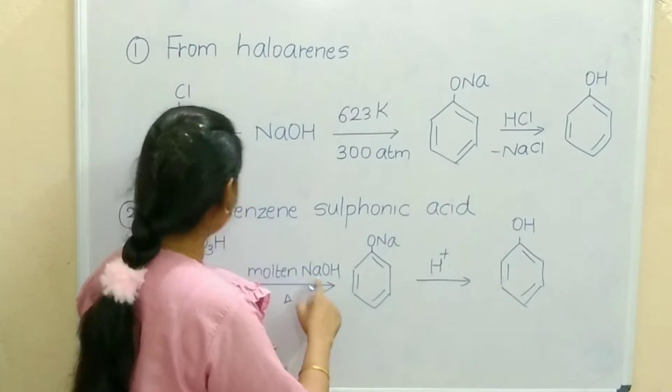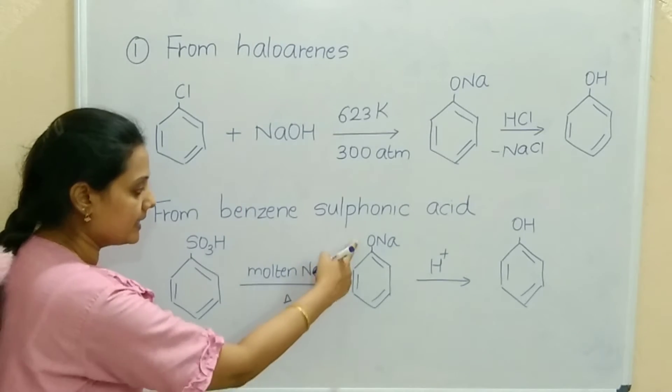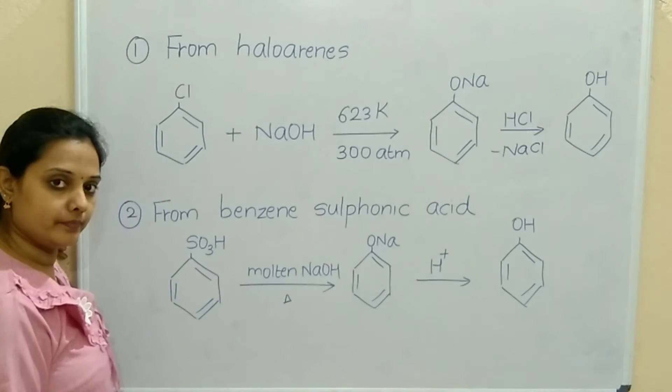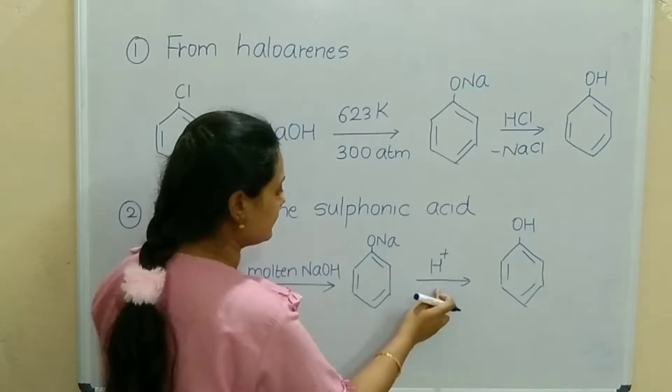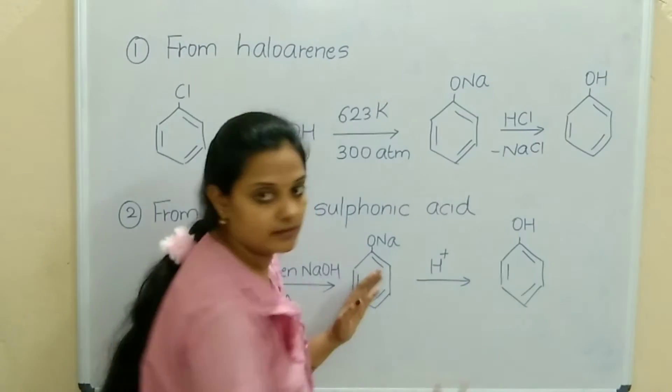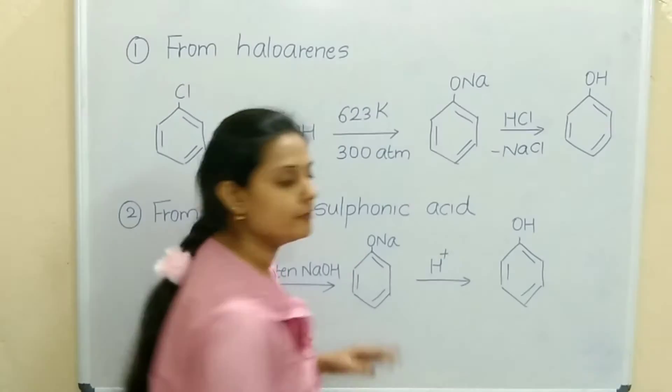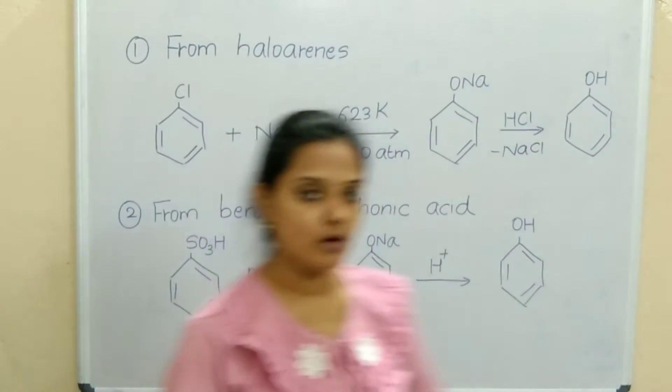At that time ONA is formed. ONA will be attached to the ring, and when further treated with an acid, the same reaction: ONA plus H+ from HCl acid will form phenol. These are the two preparations of phenol.